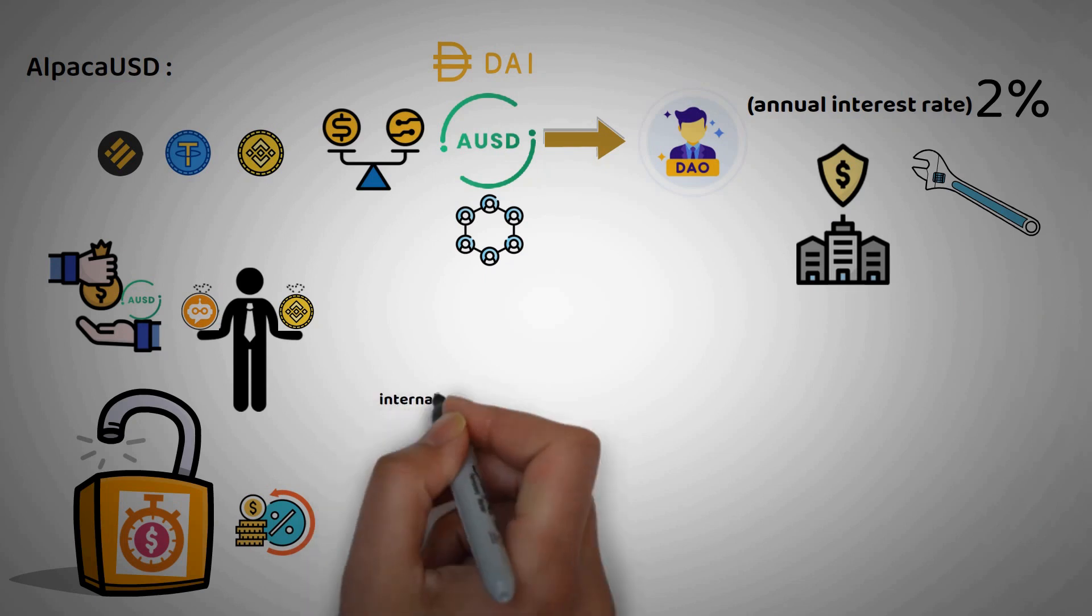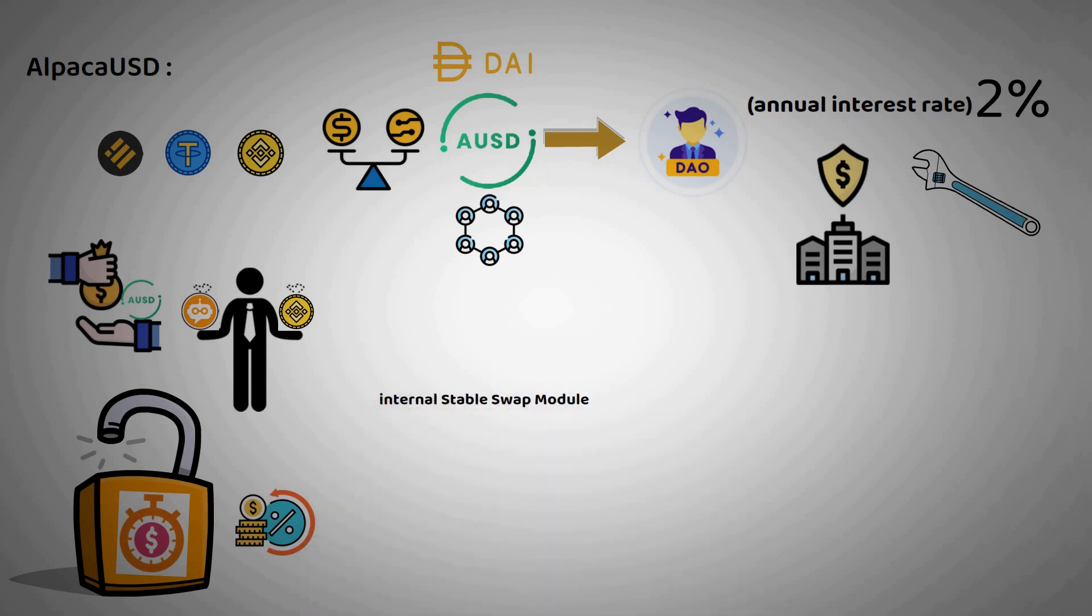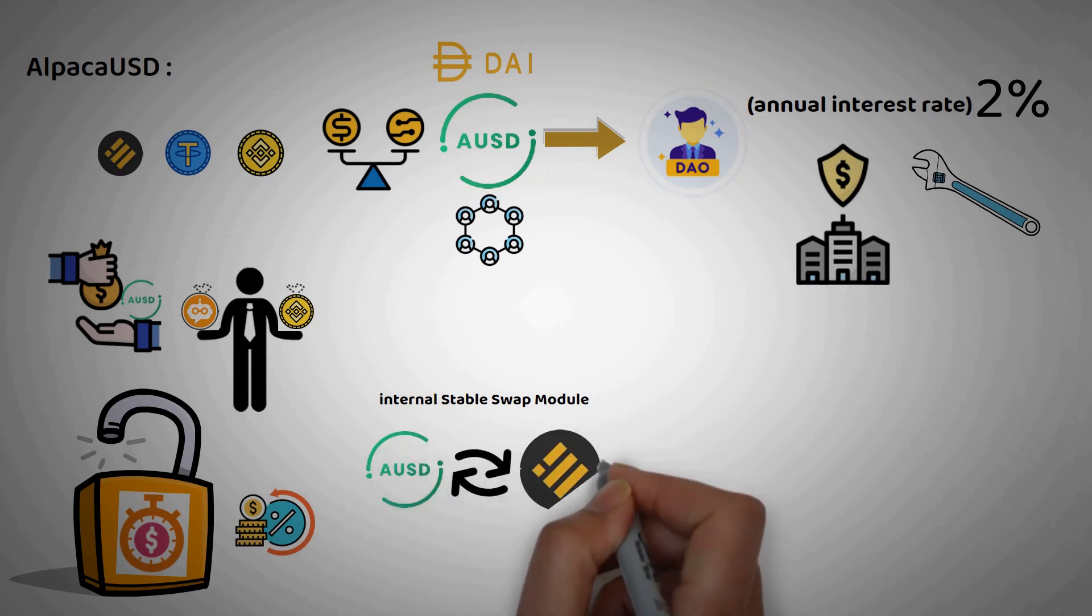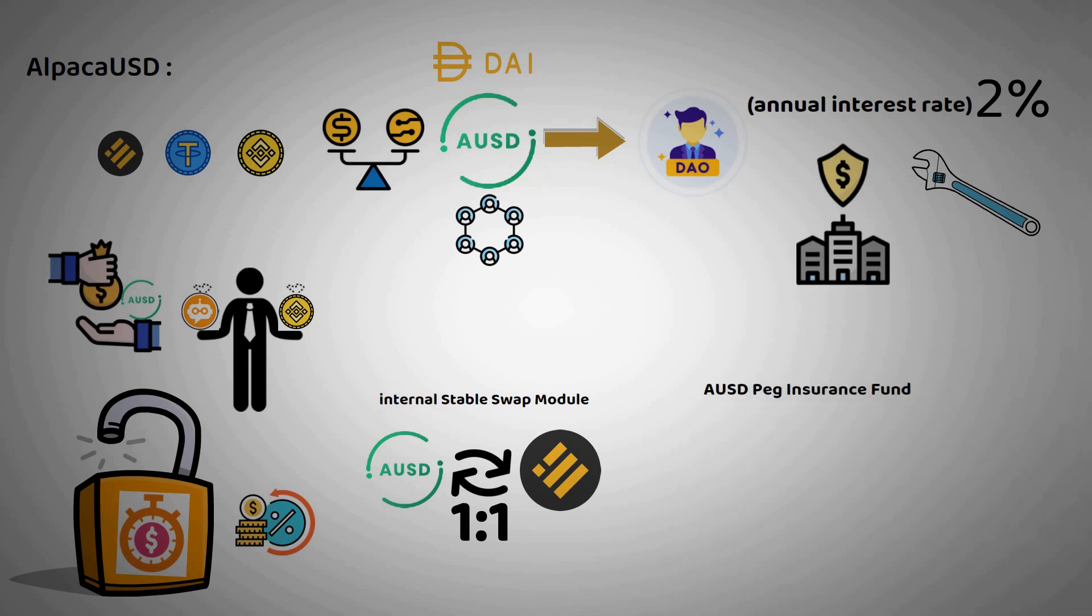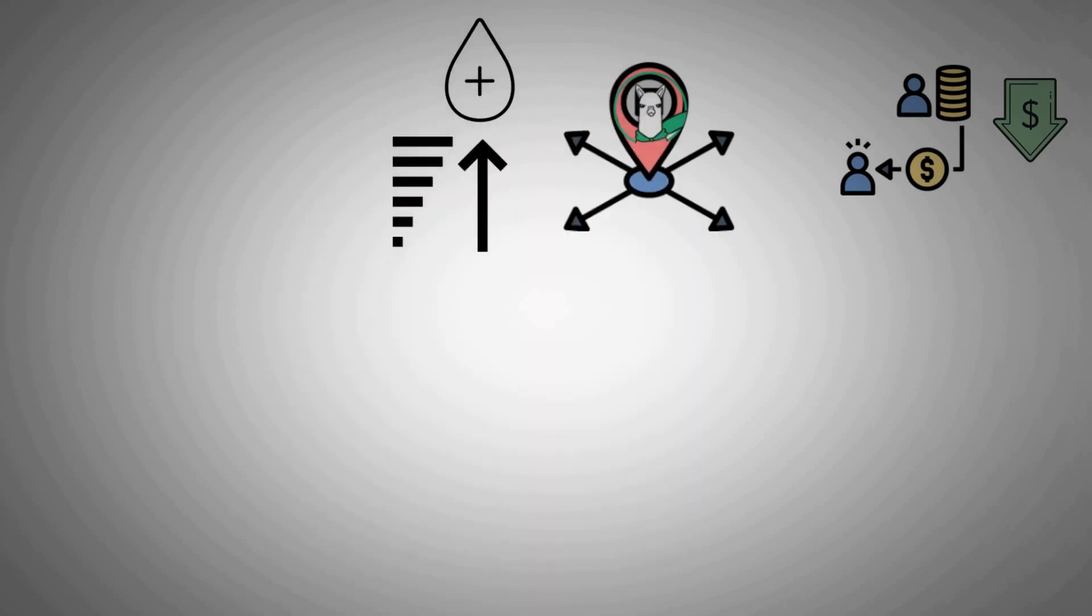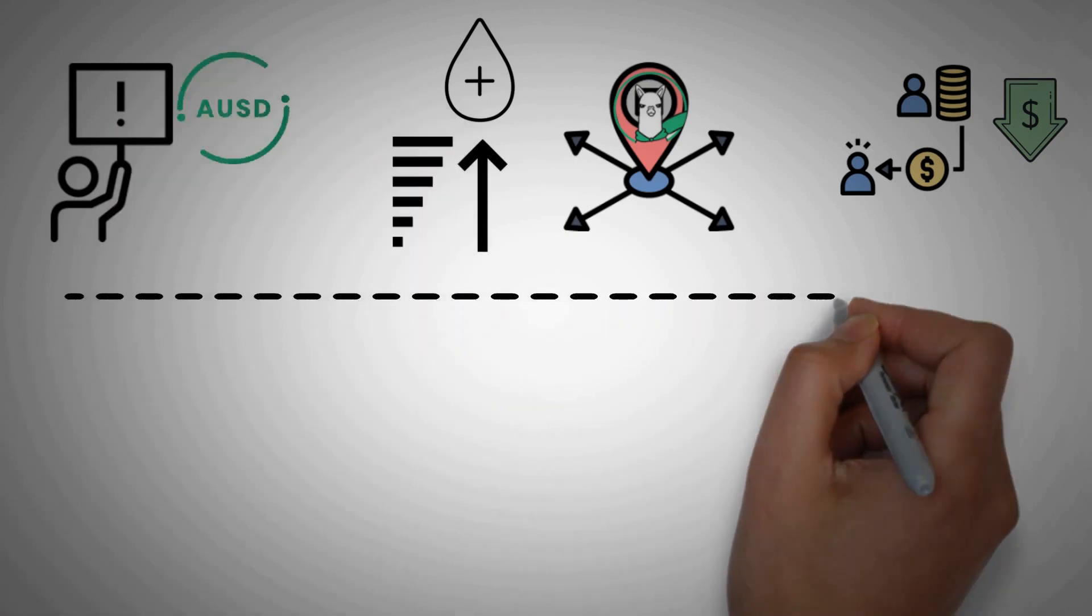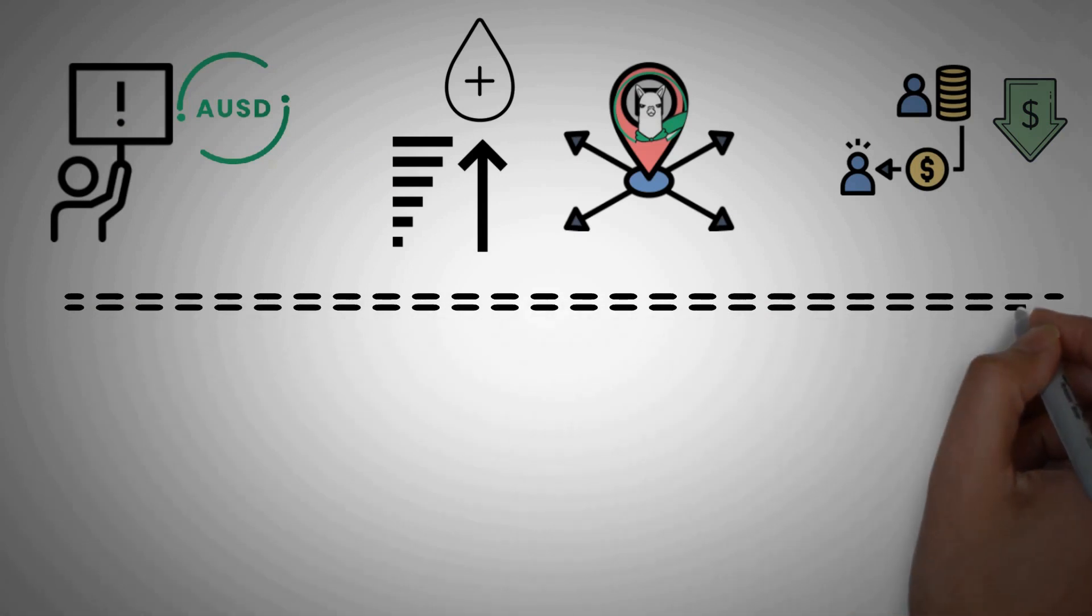Another pegging mechanism is the internal stable swap model, which allows arbitrageurs to buy or sell AUSD for BUSD at 1-to-1 rate with low fees. There is also an AUSD peg insurance fund, which acts as a buyback backstop in case AUSD ever de-pegs significantly. If an AUSD borrower's collateral falls below the liquidation price, Alpaca will gracefully liquidate their position. This means that rather than using all of the borrower's collateral, Alpaca only liquidates the amount needed to bring the position back to health. As of this point, there isn't much demand for AUSD in the wider DeFi ecosystem. Thus, despite the stabilization mechanisms outlined above, it is trading under its peg.